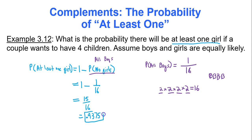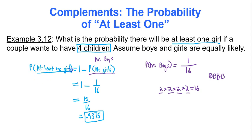That's using the complement rule for this question. The only other way would be to write out all 16 possible outcomes and count how many have at least one girl, but it's much easier to use the complement rule. I hope you enjoyed.